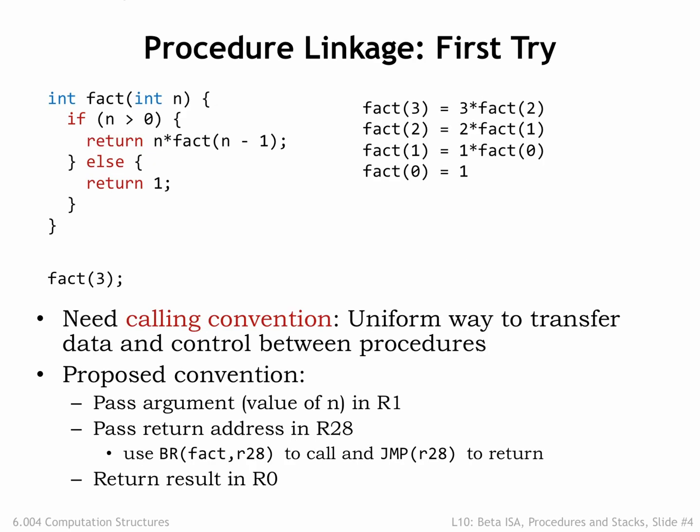To complete this implementation plan, we need a calling convention that specifies where to store the argument values during procedure calls and where the procedure should store the return value. It's tempting to simply allocate specific memory locations for the job. How about using registers? We could pass the argument value in registers starting with R1. The return address could be stored in another register, say R28. With this convention, the branch and jump instructions are just what we need to implement procedure call and return. It's usual to call the register holding the return address the linkage pointer. And finally the procedure can use, say, R0 to hold the return value.